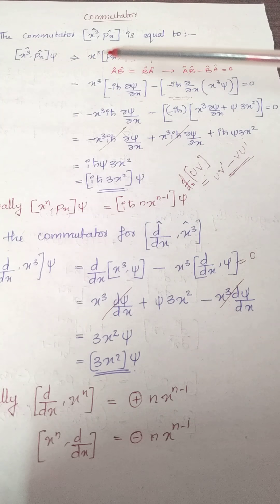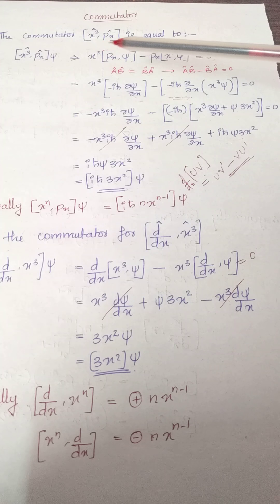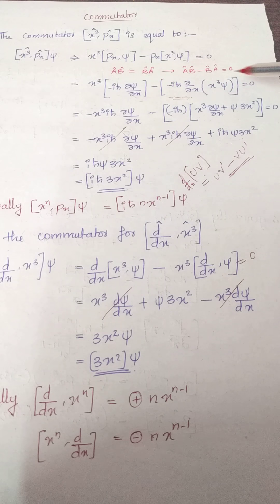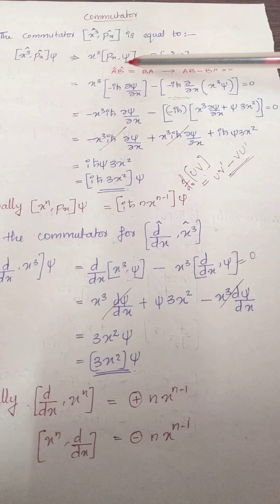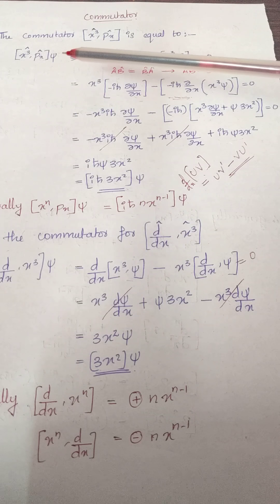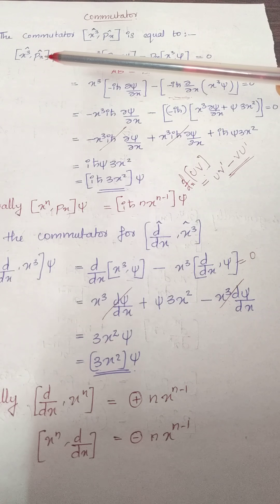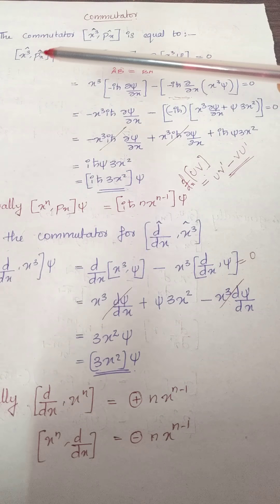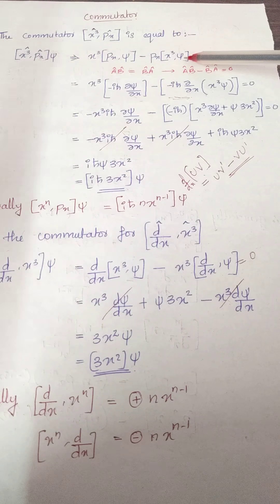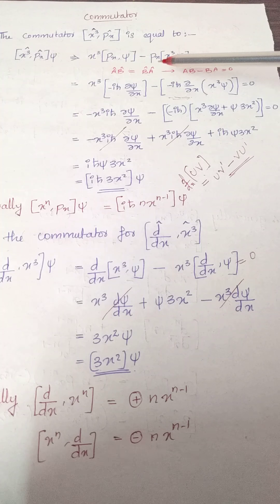So moving on to the operators we are given with, we are asked to find the commutator for these two operators. According to our property, we are going to write in this format. That means our psi function is first acting upon px, the linear momentum operator, and on that our x cubed is acting. And here the wave function is acting upon x cubed, then to that value our linear momentum operator is acting.